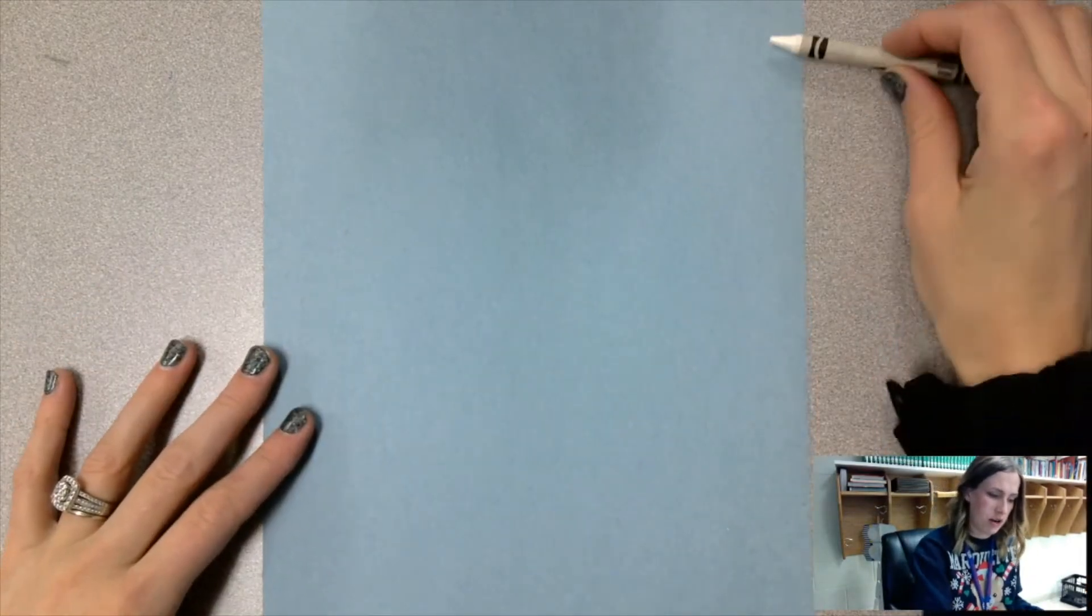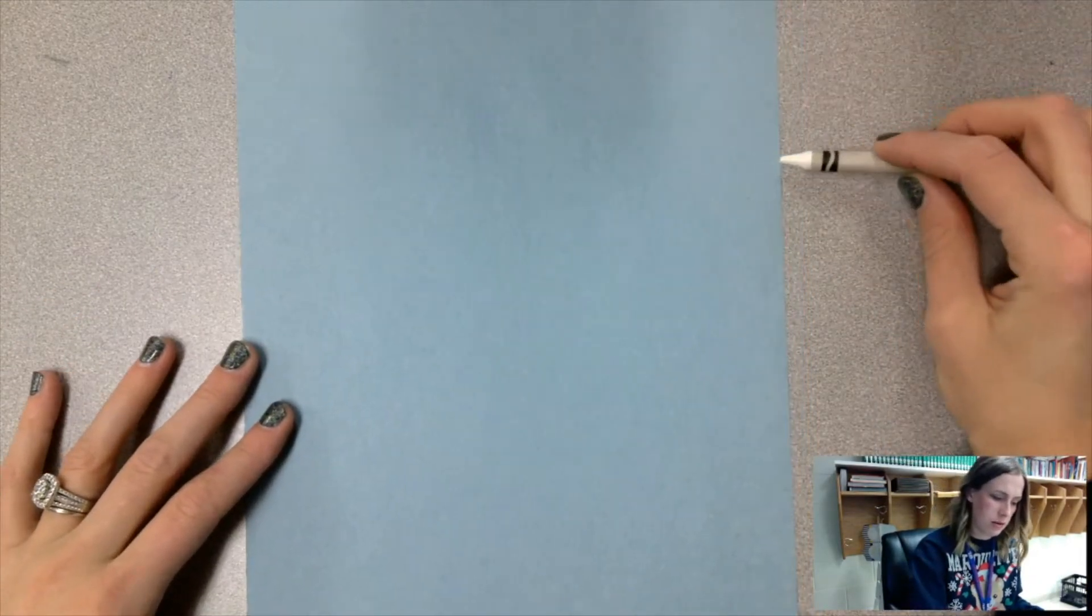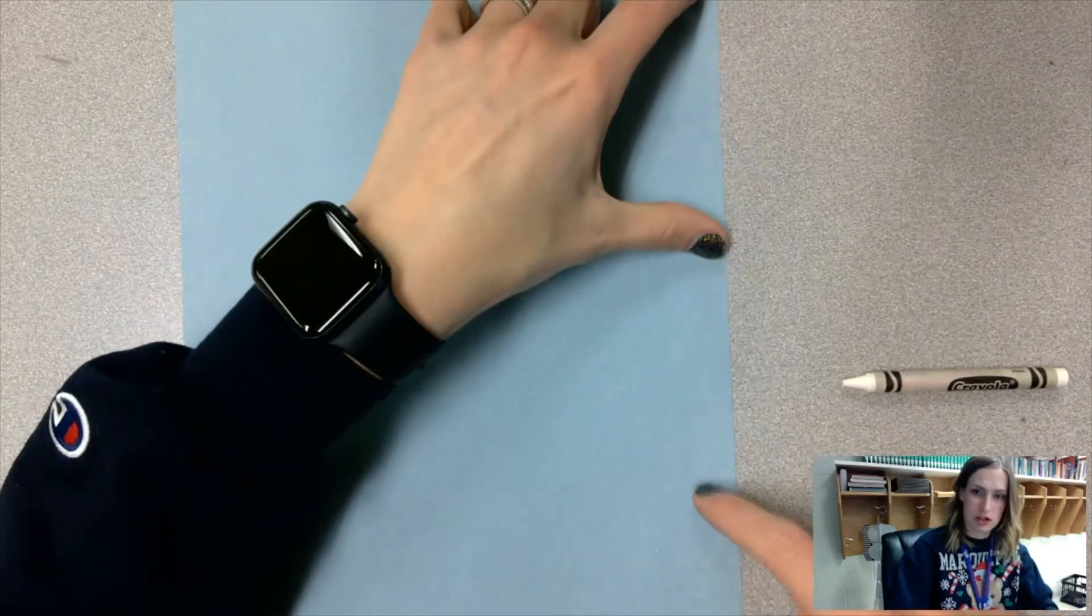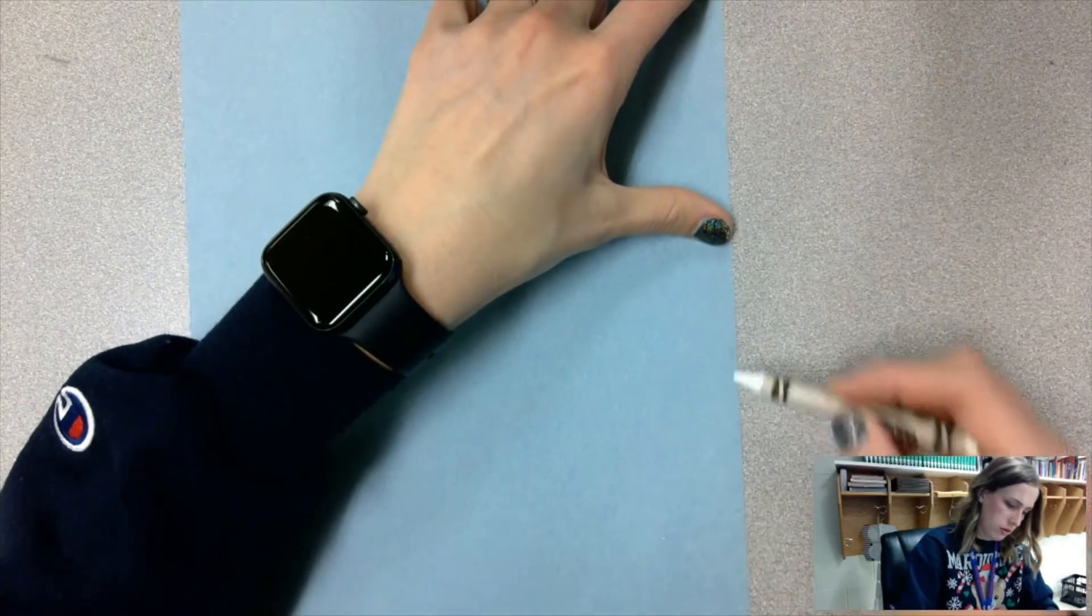Once it's this way, you're going to start about a third of the way down. When you're drawing, it's good to pay attention to the perspective, so how far from different things on the paper is what you're drawing. Picture your paper divided into three sections: one, two, three. A third of the way is about right here, and then I'm going to go to about halfway across the bottom.